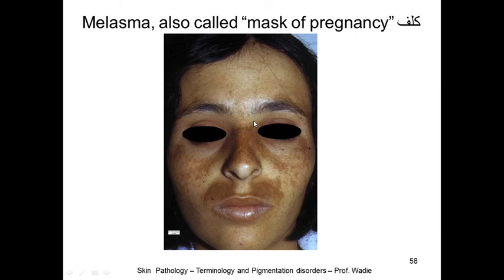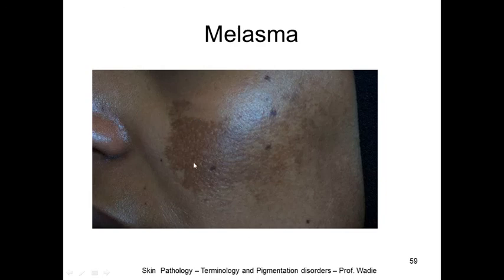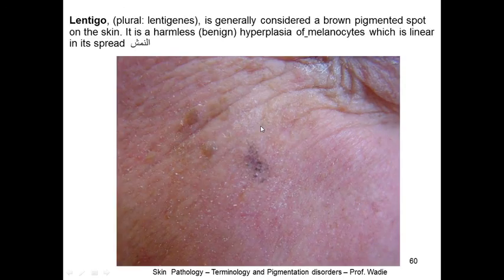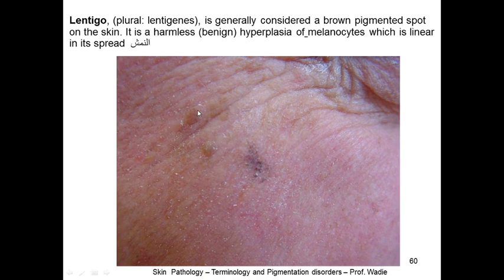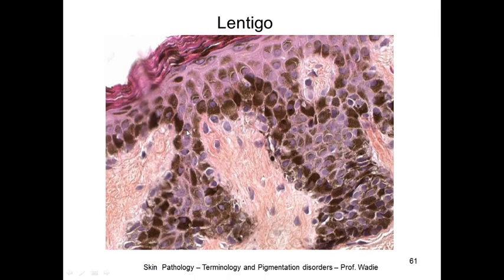Melasma is broader pigmentation also called the mask of pregnancy — you can see many hyperpigmented areas. Lentigo (plural: lentigines) is generally considered a brown pigmented spot on the skin. It is harmless — hyperpigmentation due to melanocyte increase, which is linear in its spread. These are the brown pigmentation lesions; lentigo shows melanocytes producing melanin with linear spread, producing that brownish discoloration.